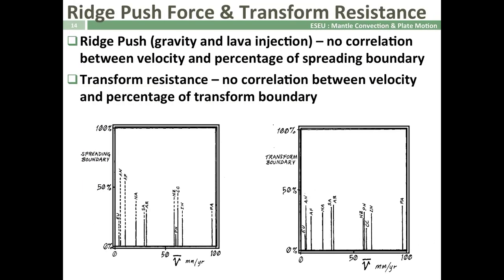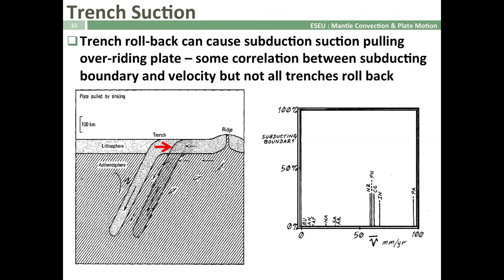Similarly, if we look at ridge push forces and transform resistance — by comparing the proportion of spreading boundary or transform boundary of a plate margin — we can see no correlation between the percentage of this boundary type and the velocity of the plate. Where we do appear to have a correlation, however, is with the percentage of subducting boundary and plate velocities, with a high proportion of subduction boundary broadly correlating with a higher plate velocity.